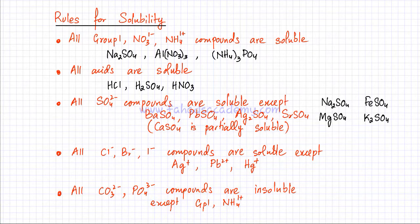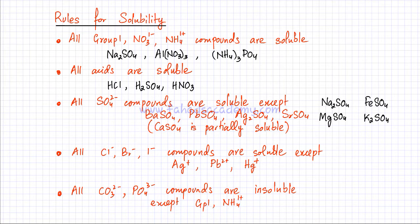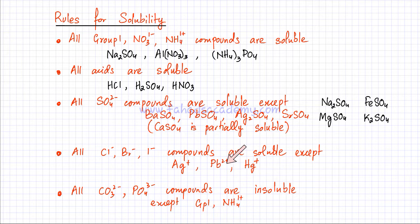The fourth rule applies to chlorides, bromides, and iodides — that is, halide compounds containing Cl⁻, Br⁻, or I⁻ ions. These compounds are all soluble, except when they contain silver ions, lead ions, or mercury ions. So silver chloride, silver bromide, and silver iodide are not soluble. Lead chloride, lead bromide, and lead iodide are also insoluble. Similarly, mercury chloride and mercury bromide are not soluble.